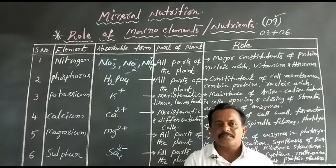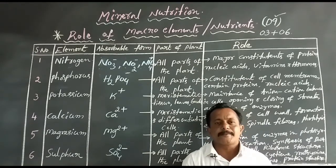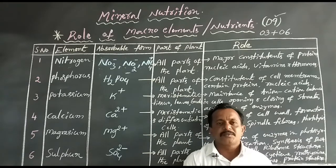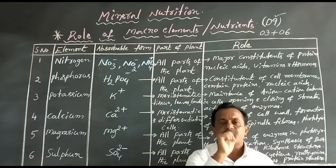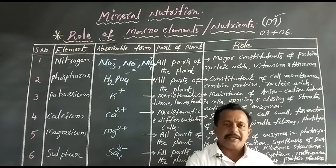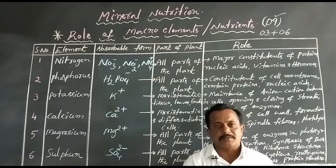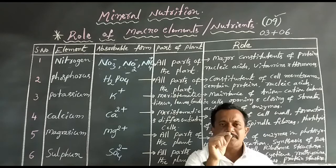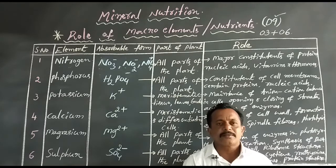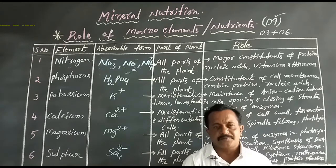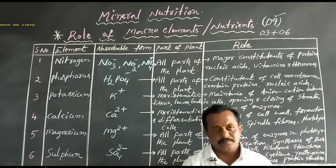The 3 non-mineral elements — carbon, hydrogen, and oxygen — are also called framework or structural elements of a plant cell. These three elements combine to make carbohydrates such as glucose and sugars. They are obtained from atmospheric carbon dioxide (CO2) and water (H2O).